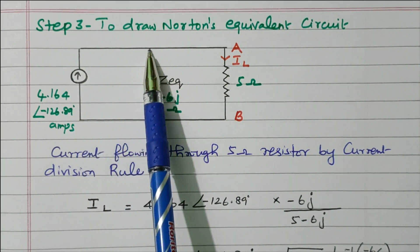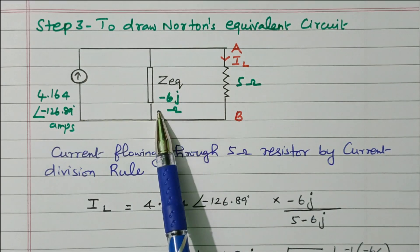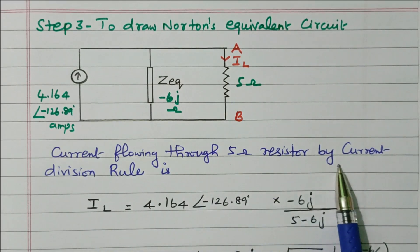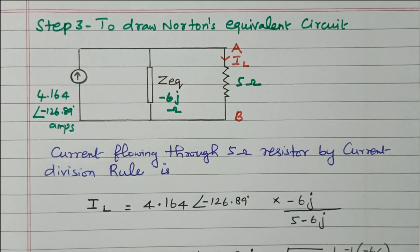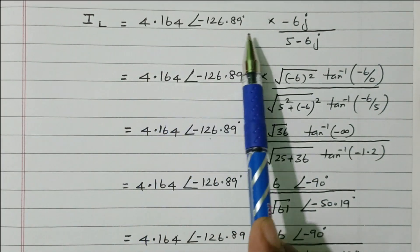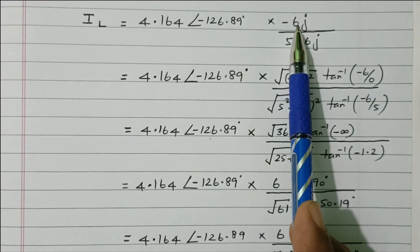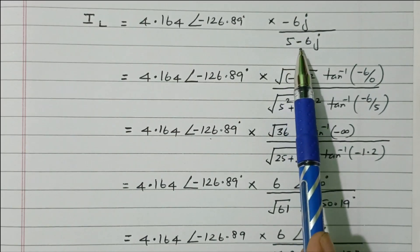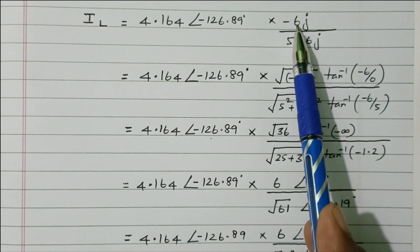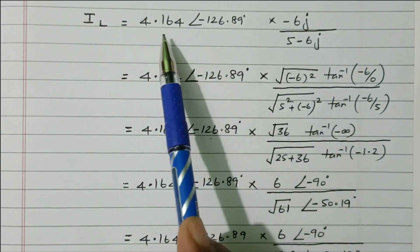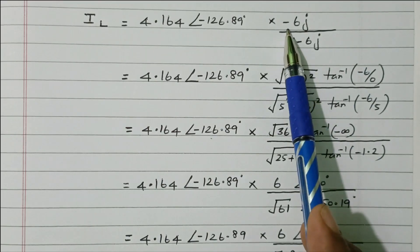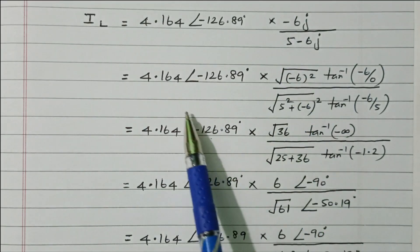Using the current divider rule: the total current divides between Z-equivalent and the 5 ohm resistor. IL = total current × (other branch impedance) / (total impedance) = ISC × (−j6) / (5 − j6). In the current divider rule, we multiply by the other branch impedance. In voltage divider rule, we multiply by the same branch resistance.